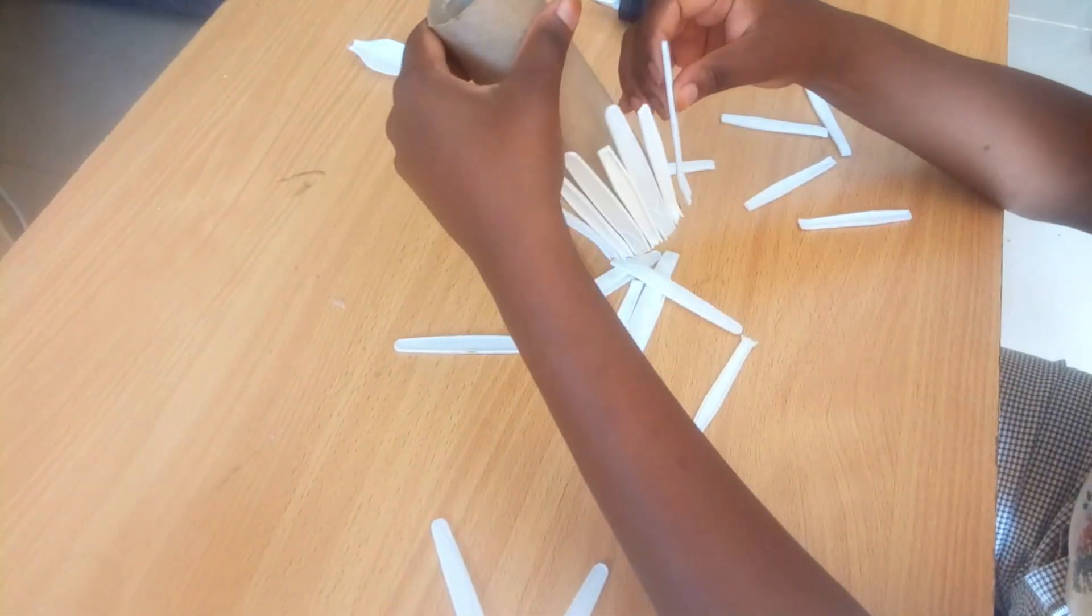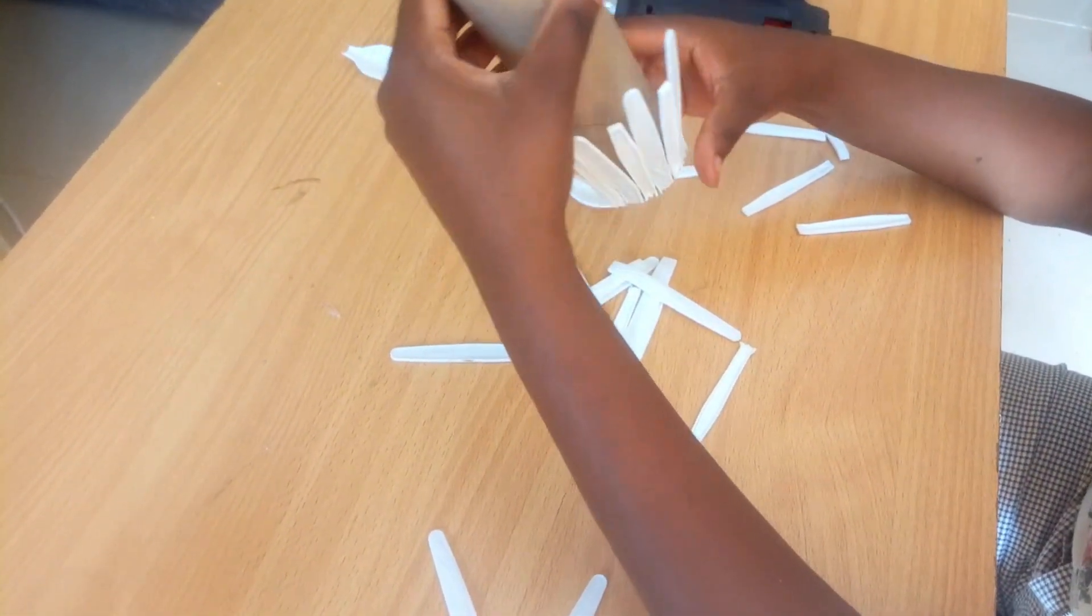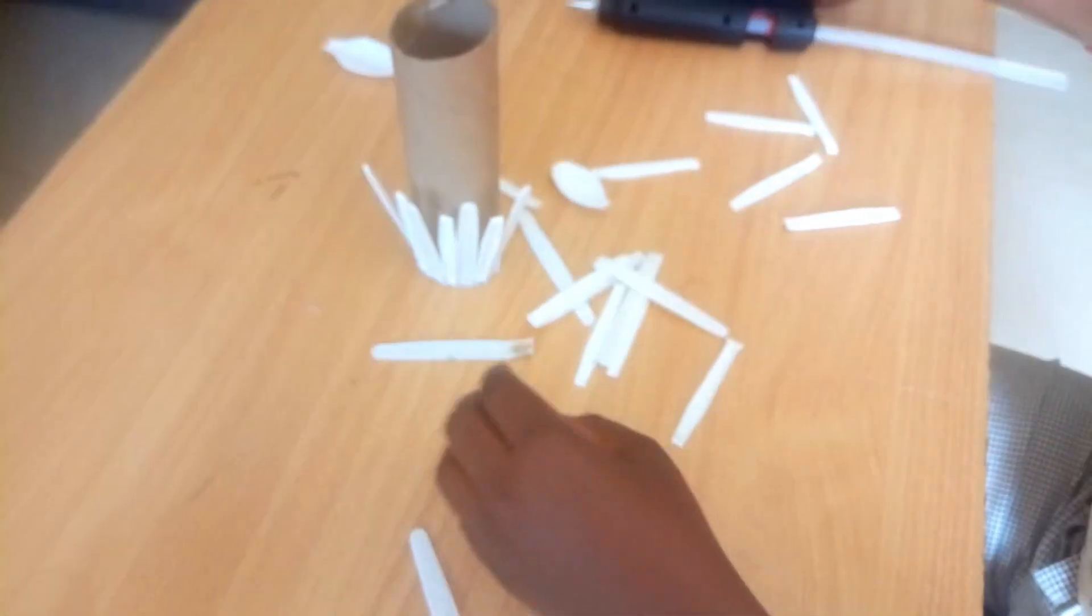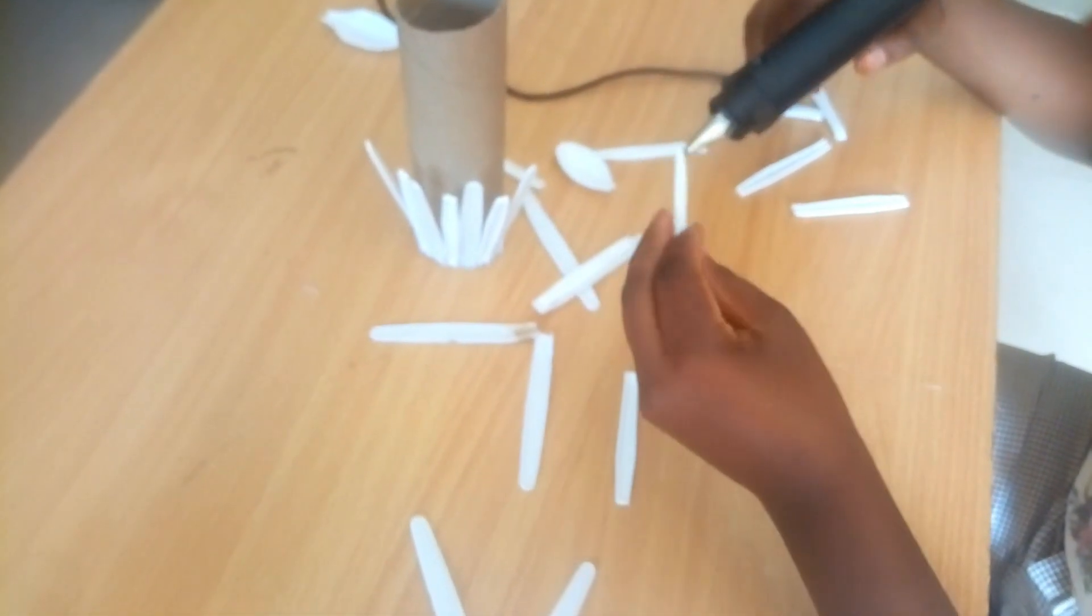So be gentle and very very careful when you're gluing them down because my friend, the glue gun is hot. The glue is hot, it comes out super super hot, so when you're using this be very very careful.